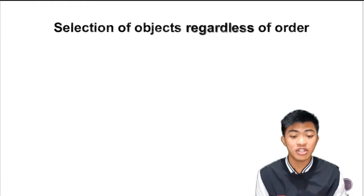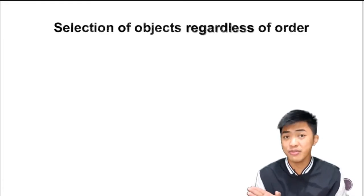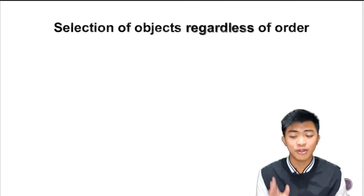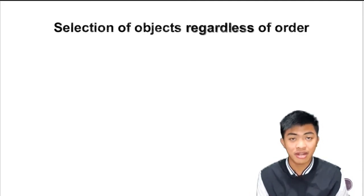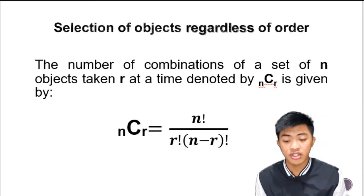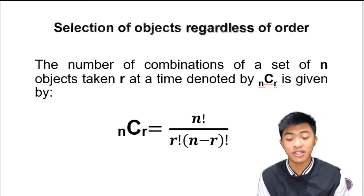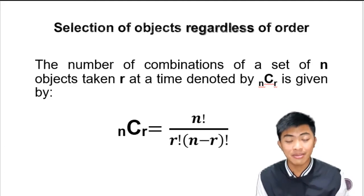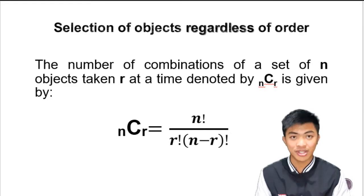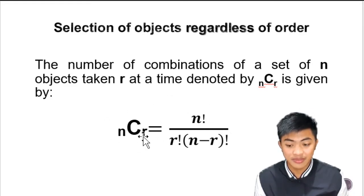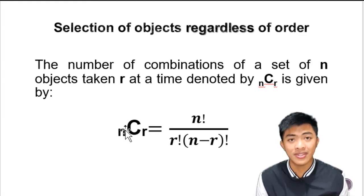Combination is the selection of objects regardless of order. So for permutation, there's an arrangement involved. For combination, arrangement doesn't matter. So the number of combinations of a set of n objects taken r at a time, denoted by nCr, is given by this formula: n factorial over r factorial times the quantity n minus r factorial. Don't forget this one, and don't forget how to evaluate factorial notation. But later, I'm going to show you how you can input this easily in your calculator.